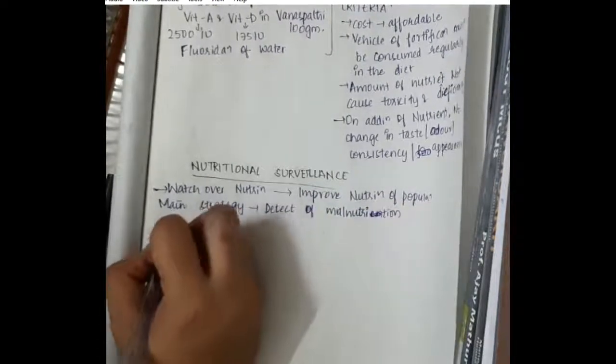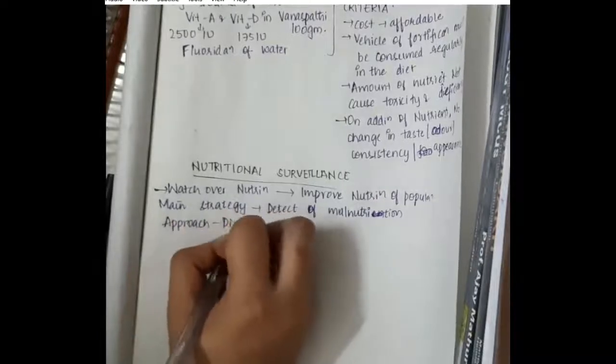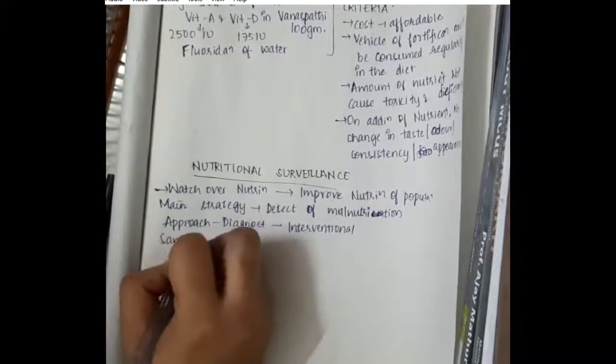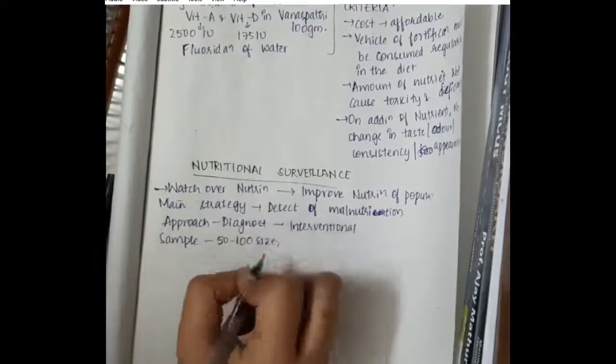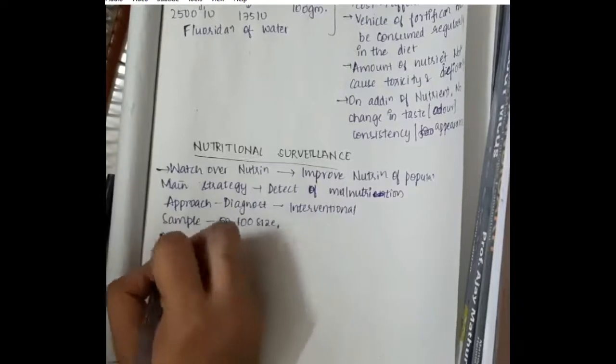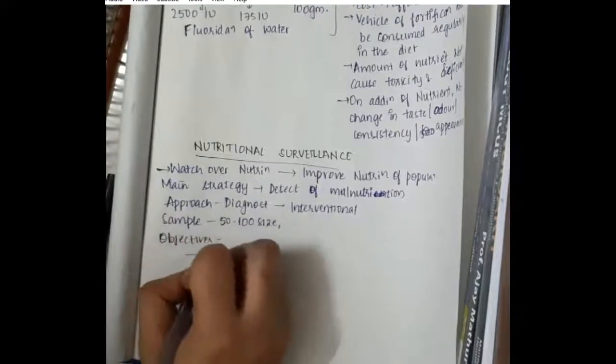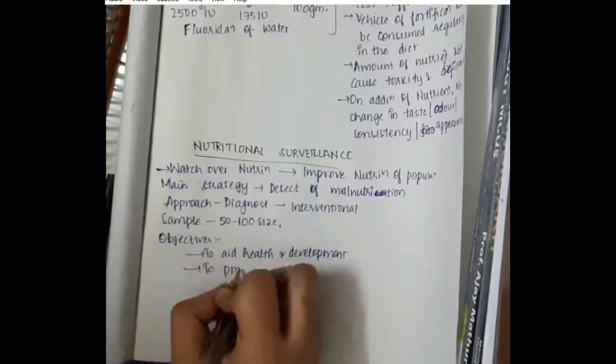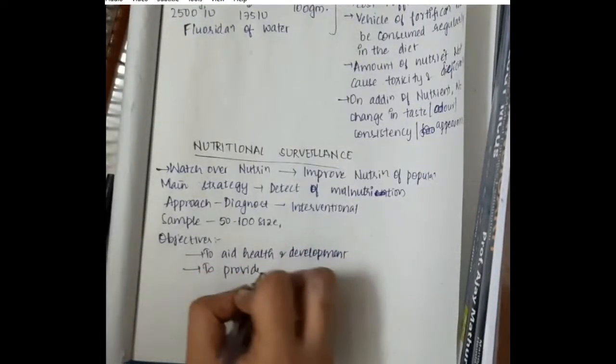The approach here is first we will have to approach it, then we will have to diagnose, and then we will have to intervene with the problem. The sample size which we take is 50 to 100 people, and we will survey the nutritional status of those people. The objective is to aid health and development.